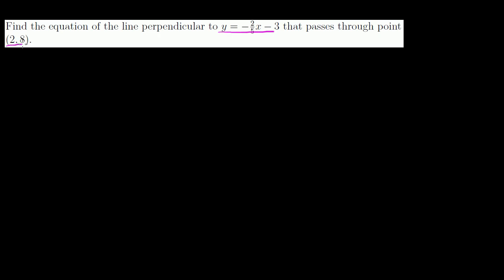Let's do one more. Find the equation of a line perpendicular to this line that passes through the point (2, 8). Since it's perpendicular to a line with slope negative 2 fifths, its slope has to be the negative inverse of negative 2 fifths. The inverse of 2 fifths is 5 halves, and the negative of a negative is positive. So the perpendicular line's slope is positive 5 halves.